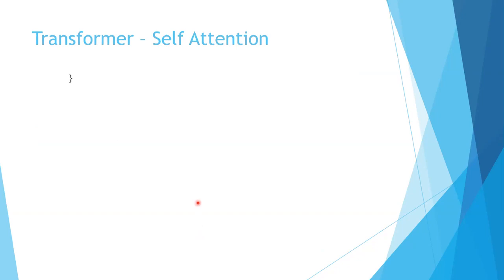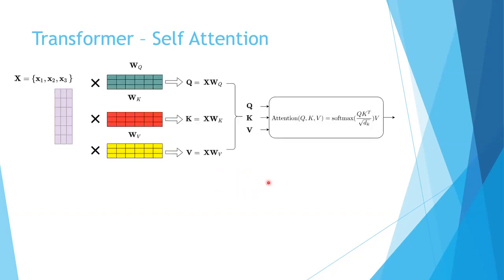In order to fully understand the proposed network architecture, I thought it would be better to first do a quick revision of all the building blocks of the network. The first and most important component is the self-attention mechanism, as it allows the model to focus on different parts of the input sequence to compute a representation for the given input element.